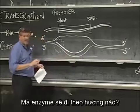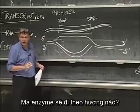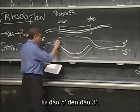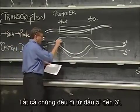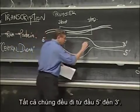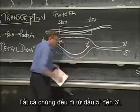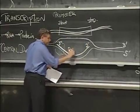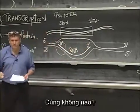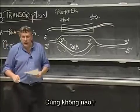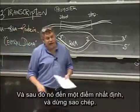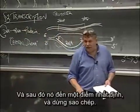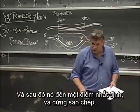Under certain circumstances, this promoter invites an enzyme to sit down and the enzyme starts copying. Which direction does this enzyme go? Five prime to three prime — they all go five prime to three prime. But it makes RNA. And then it gets to a certain point and it stops copying.